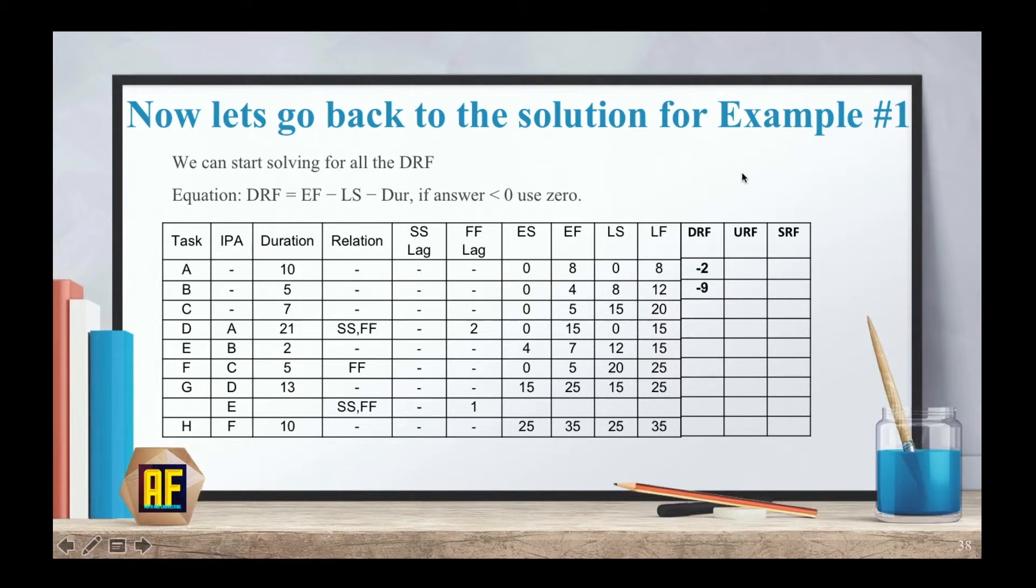I'm going to just write the answers here one by one in three seconds from now. So our answer for B is minus nine. Our answer for C minus seventeen. D minus six. E minus seven. F minus twenty. G minus three. And H zero. Because all of these answers are negative, we're going to use zero.